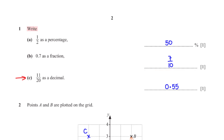Write 11 over 20 as a decimal. When we type this into the calculator, we get the decimal equivalent as 0.55.